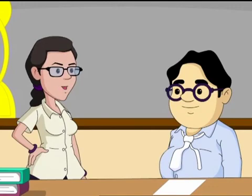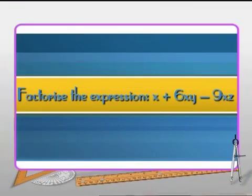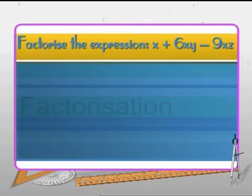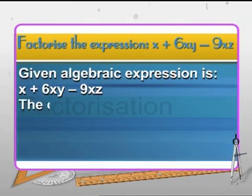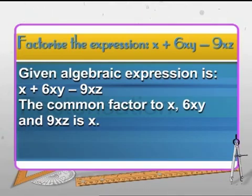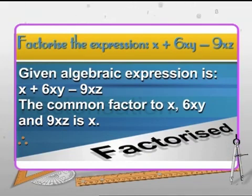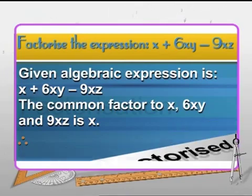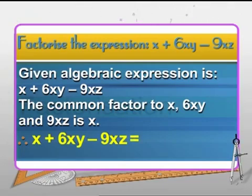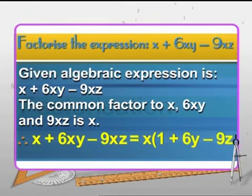Let's factorize the expression x + 6xy − 9xz. Let's check for the common factors. The common factor to the three terms x, 6xy, and 9xz is x. Therefore the expression can be factorized by taking out x as common: x + 6xy − 9xz = x × (1 + 6y − 9z).